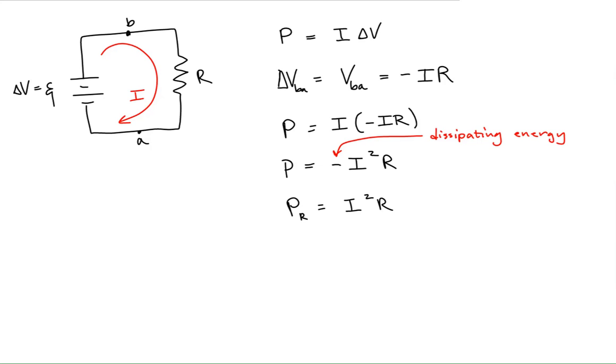we'll just look at the magnitude of this. This is how your book is going to express that formula, where we know that this I squared R is just the rate of energy dissipation, and the dissipation implies the minus sign.